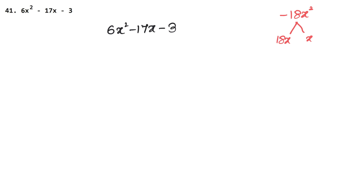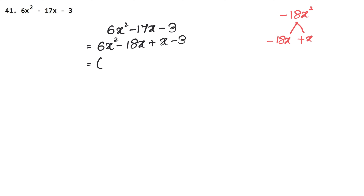Since we have to subtract, the sign of the bigger factor will be minus and the other sign will be plus. So we write 6x squared minus 18x plus 1x, since 18 times 1 is 18 and minus 18 plus 1 gives minus 17x.